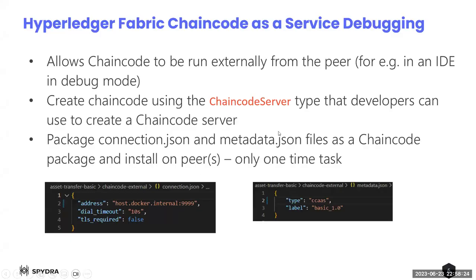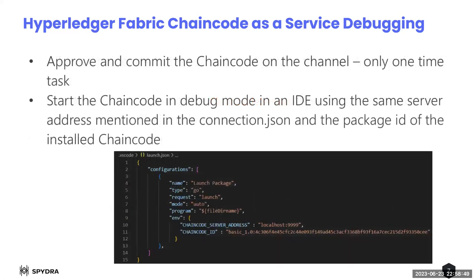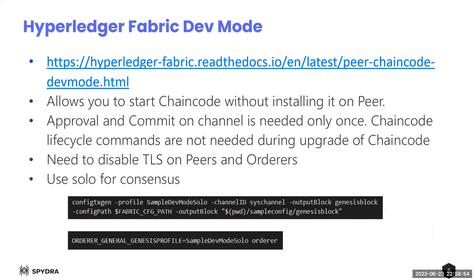So this is literally what we did. Regardless of what language it is — Golang, Node.js, or Java — as long as you configure Visual Studio to debug the corresponding language, you can do these additional steps of configuring connection.json and metadata.json properly and start debugging. There is another way of doing this also, which is using the Fabric dev mode.